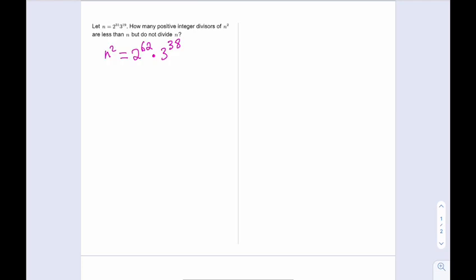Now we can go ahead and find the number of factors of this number or divisors of this number by using the prime factorization. So this number has 62 plus 1 multiplied by 38 plus 1 factors.